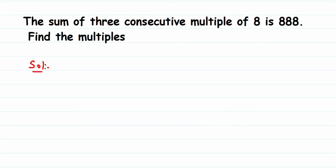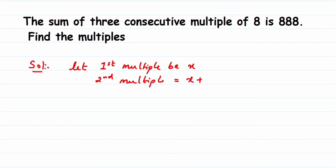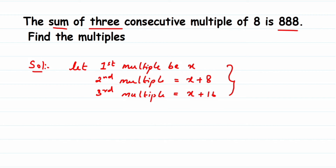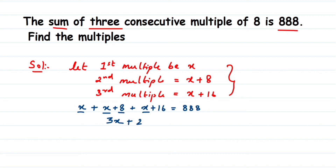Now let's start solving. We assume the first multiple is x, the second is x plus 8, and the third is x plus 16. The question says the sum of these three is 888, so: x plus (x plus 8) plus (x plus 16) equals 888. Adding the variables: 3x plus 8 plus 16 equals 888, which gives 3x plus 24 equals 888.